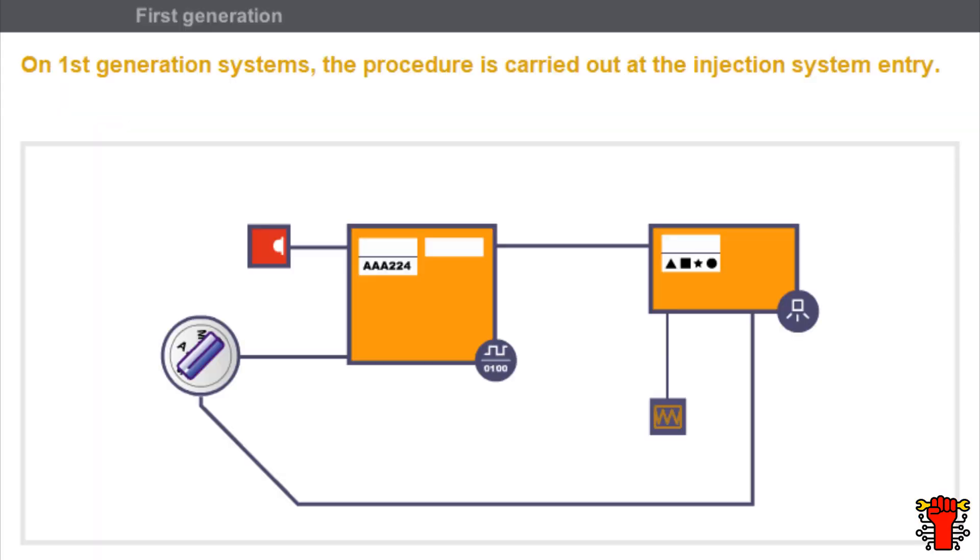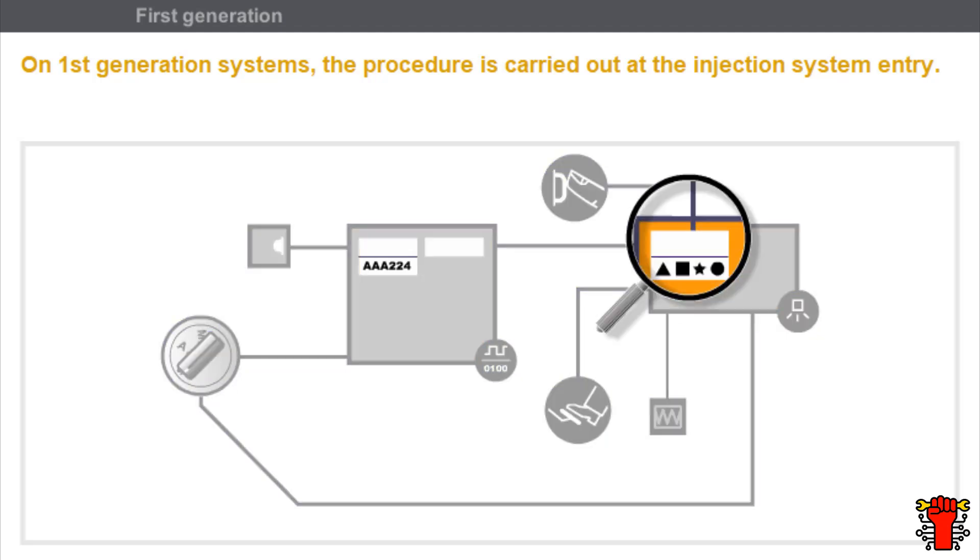We looked at repair procedures during the Level 1 Immobilizer course. Now we're going to look at the operating principle for these procedures. On first-generation systems, the repair code can be entered according to the procedure using the Driving Assistance button and the accelerator pedal.